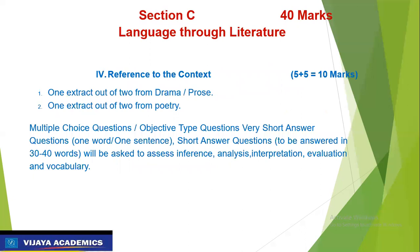The third section is Section C, which carries 40 marks — Language Through Literature. There will be four questions, and in this, two questions on Reference to Context carry 5 + 5 = 10 marks. Question number one is one extract out of two from drama and prose, and the second question will be one extract out of two from poetry. Each of these two questions carries five marks.